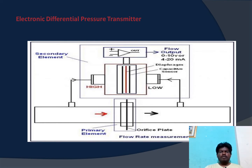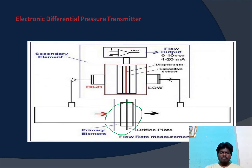This electronic differential pressure transmitter consists of two sensors. The first is a primary sensor, which is located here in a pipeline to generate the differential pressure — it is called an orifice plate. Here we are interested to measure the flow rate through this pipe.